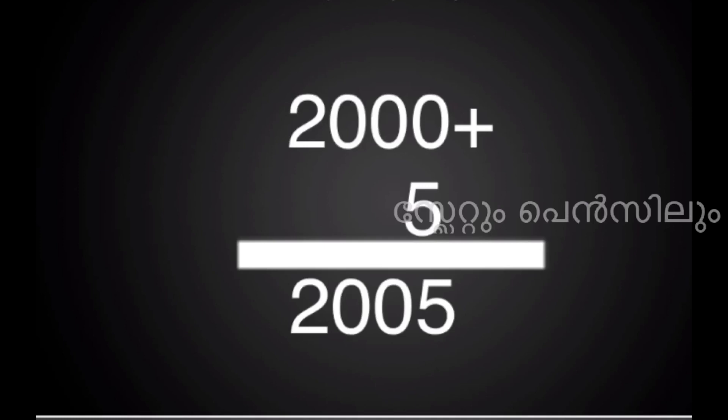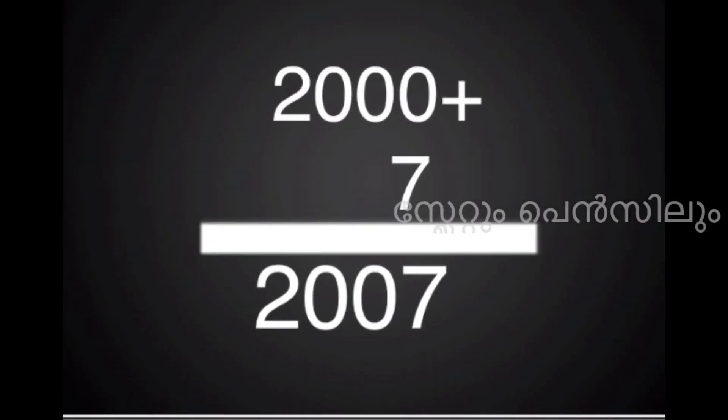Then we add 2007. 0 plus 7 is 7; 0, 0, 2 gives us 2,007.